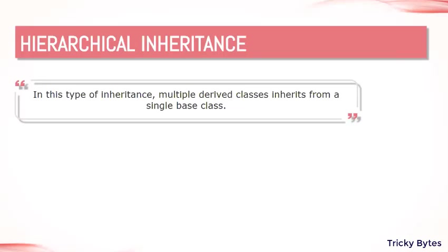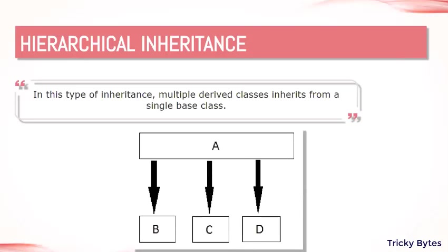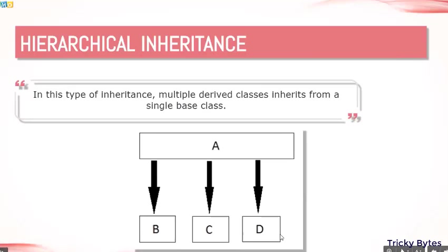In hierarchical inheritance, we have multiple derived classes from one single base class. For example, class A is the base class — like a grandfather — and it has three children: B, C, and D. All three inherit from the same class A. Then B, C, and D each have their own sons: X inherits from B, Y inherits from C, and Z inherits from D.